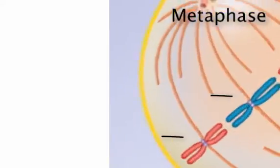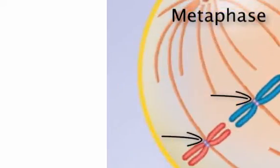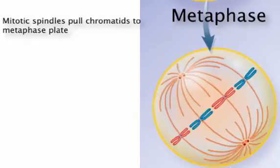In metaphase, the spindle fibers tug on the kinetochores, pulling them to the midline of the cell, forming the mitotic spindle.